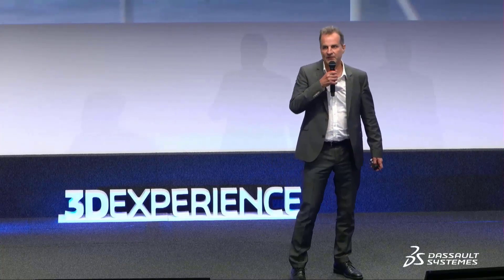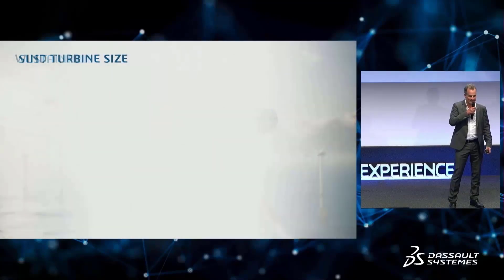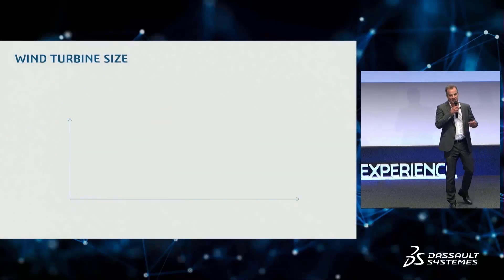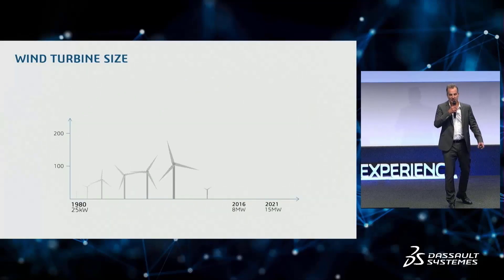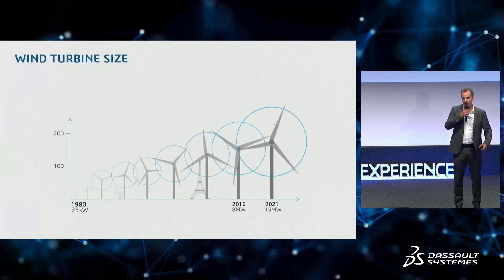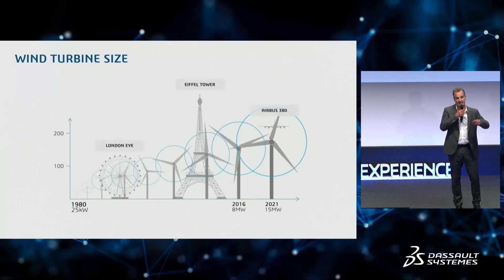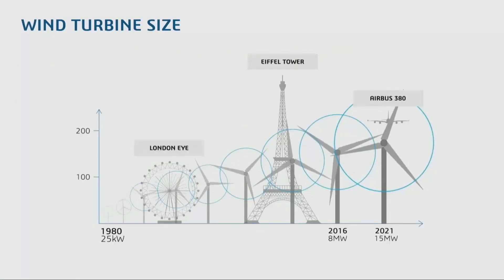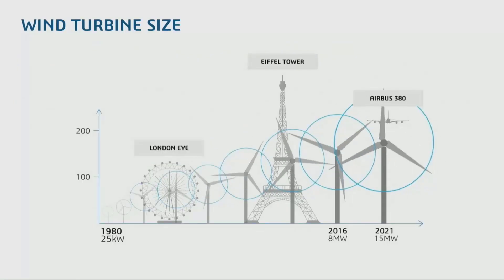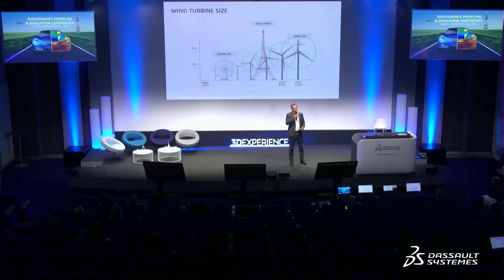The first thing we have to understand is the size of these turbines. They are absolutely massive and continually growing. We're already seeing turbines with rotor diameters of over 250 meters, and that's predicted to continue growing. We can't take a wind turbine and put it into a wind tunnel to test a 100-year wind gust — this all has to be done by simulation. Simulation is, in fact, driving the design of these new wind turbines.